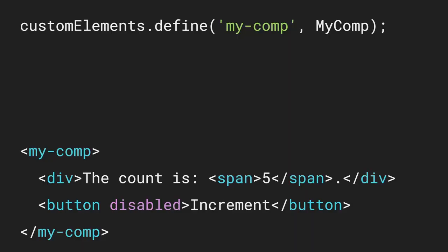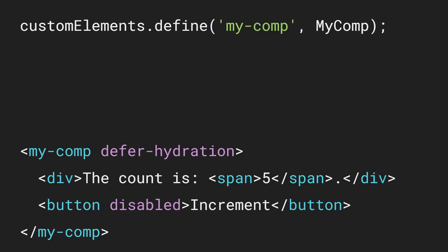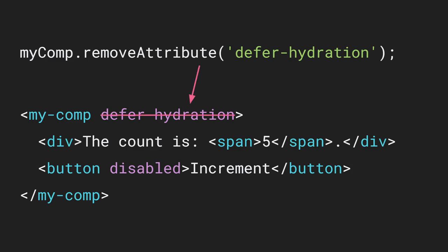The defer hydration community protocol explicitly defines a means for deferring and then triggering hydration. Any components which implement this protocol will be interoperable with all other components that use that protocol, even if those two components have no knowledge of each other and no shared implementation. Normally when a component is defined it automatically connects and immediately hydrates. However, you can specify defer-hydration on the element. When the component is initially upgraded, it first checks whether defer-hydration was set — if so, it does nothing. Upgrading the component is a complete no-op. Later on, any JavaScript code could remove that attribute, and the component detects that change and immediately triggers hydration.